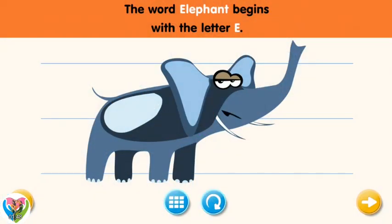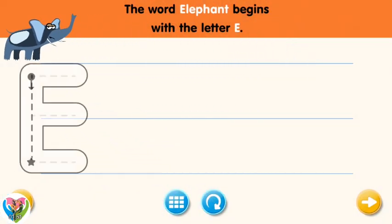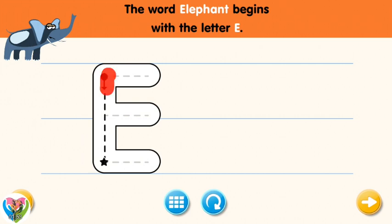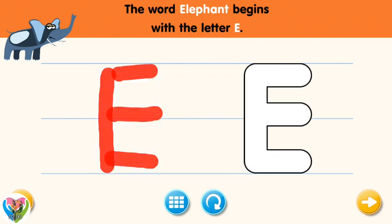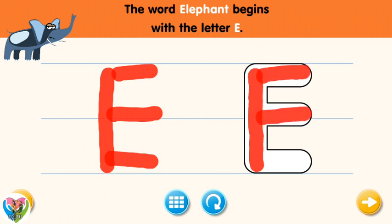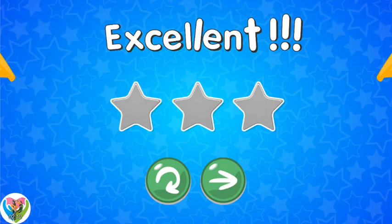The word elephant begins with the letter E. Trace the letter E. Connect the dot and the star with a line. Ok, one more time. Nice! Now write the letter E yourself. Excellent!